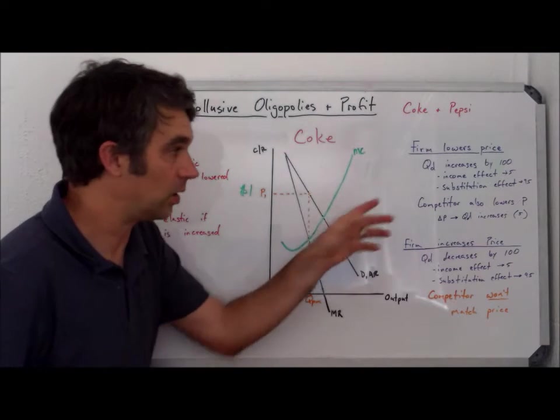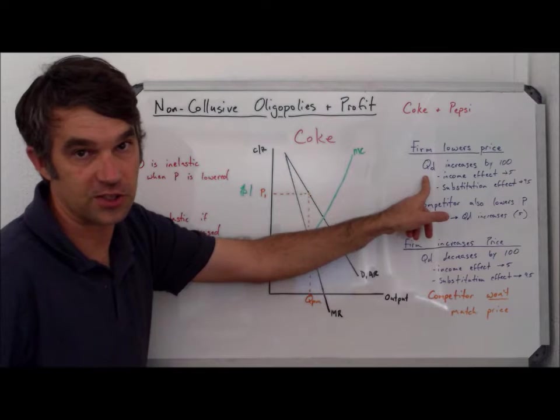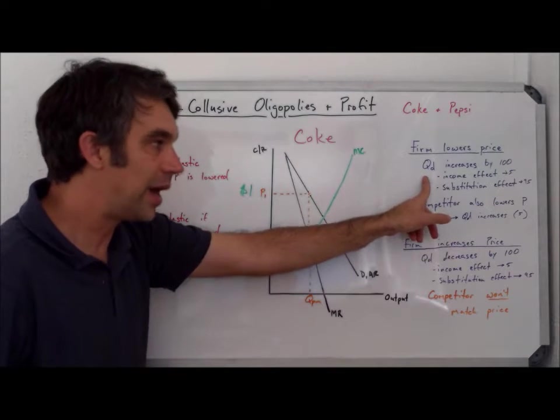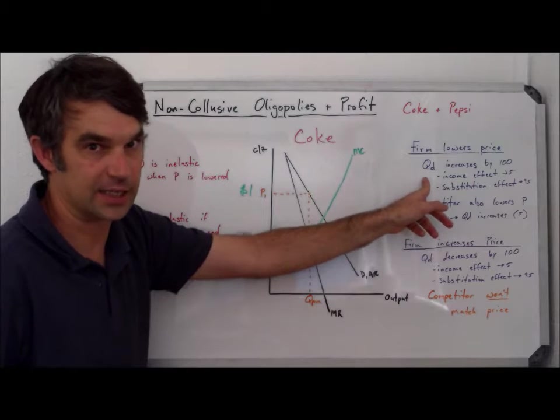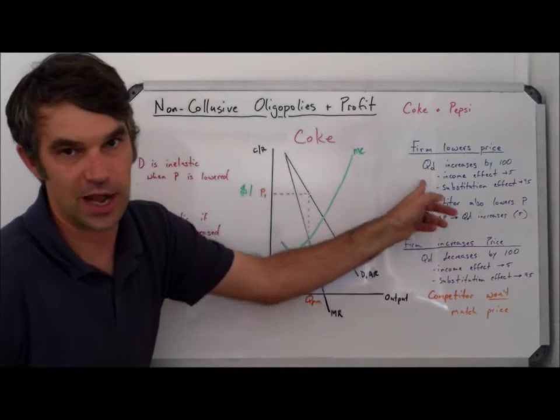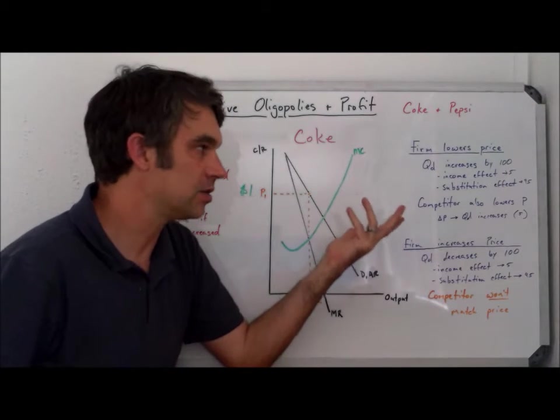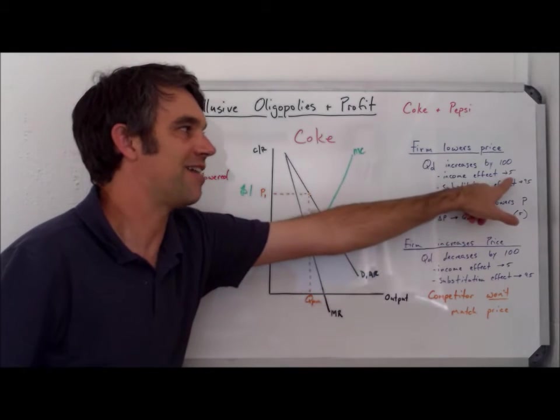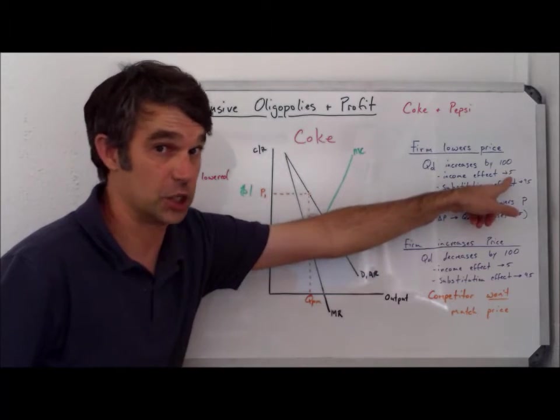It's possible that some people would start buying Coke simply because it's cheaper. This is what's known as the income effect. But realistically, not too many people are going to buy Coke at $0.90 who wouldn't have also bought it at $1, because the difference in price, $0.10, isn't a very significant amount to that many people. So maybe we see five more people buy Coke because of the lower price, but to be honest, that's being generous.